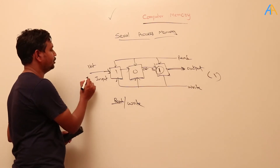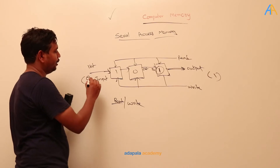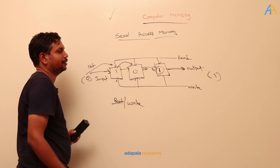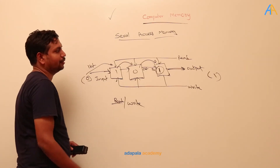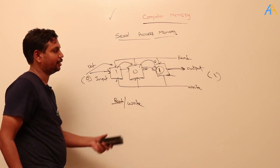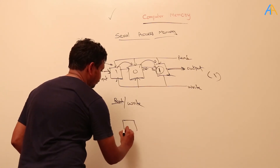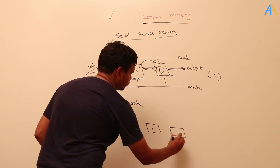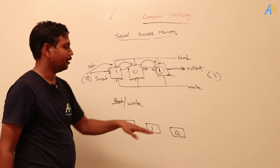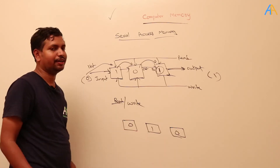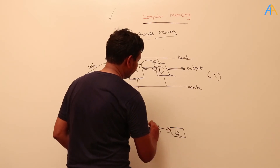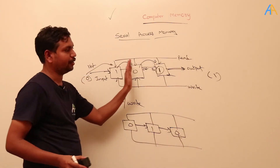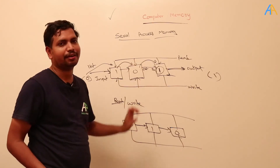This one bit — for example, zero is the input — this zero will be written to this register. And the one that is there will be written into the next register, this zero will be written into the next register. This one will be the output. Now what will happen: this will become zero, this will become one, this will become zero. So after one read/write cycle, we read one, and after writing zero, these are the contents of the register. This register is also called a shift register, because it is shifting the contents either to the left or right, depending on the configuration.